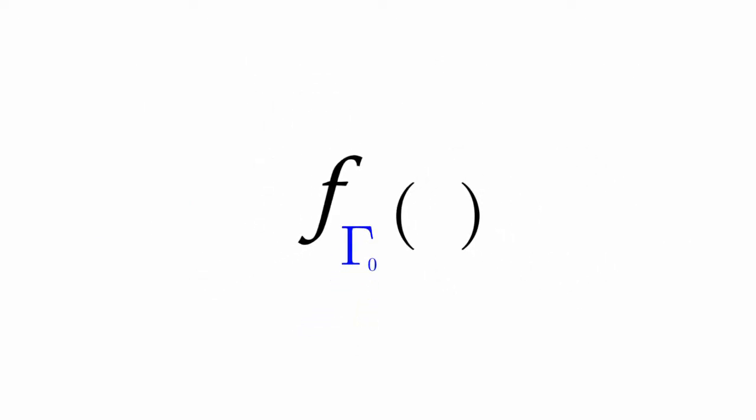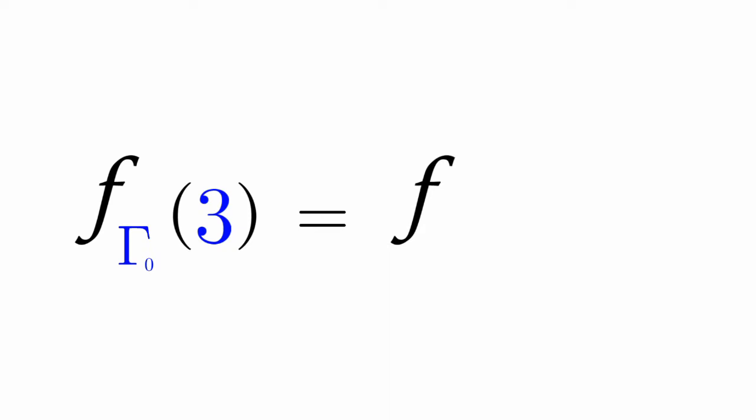Let's have f gamma nought of three. That is equal to f with an index of phi of phi of phi zero of three. Phi zero of zero, as we've known earlier, is equal to one.